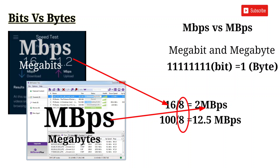So we can see how the download speed works. This video explains the difference between bits and bytes and how internet speed translates to actual download speed. So let's get started.